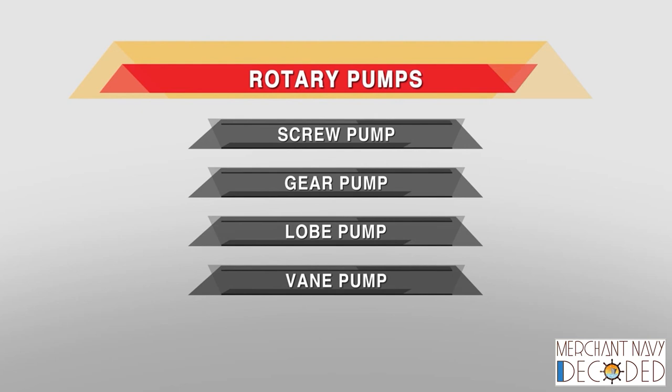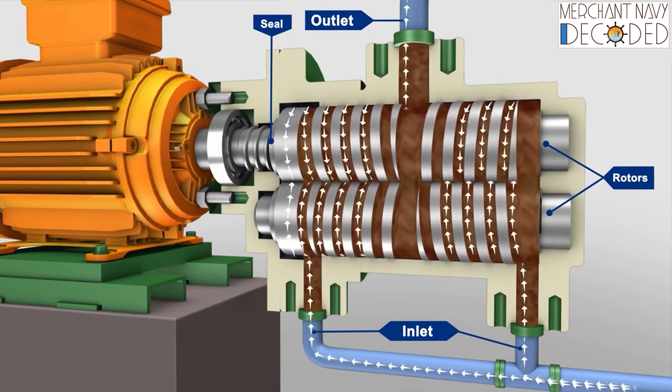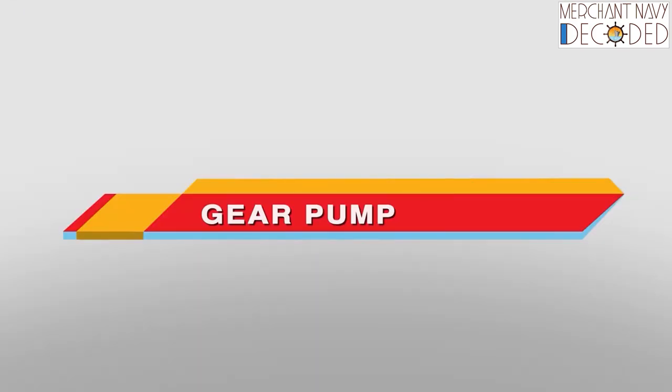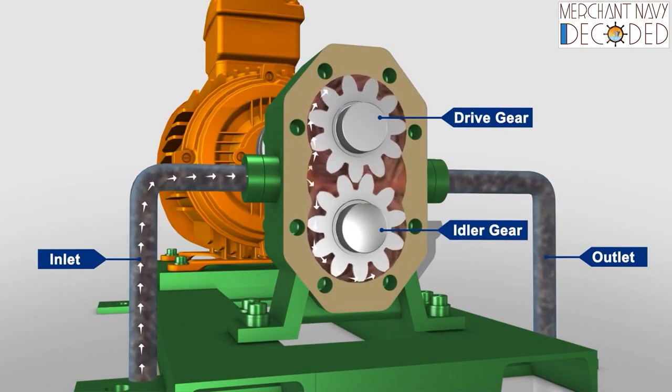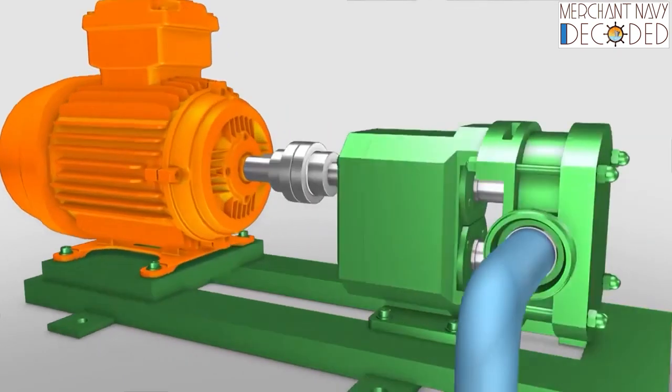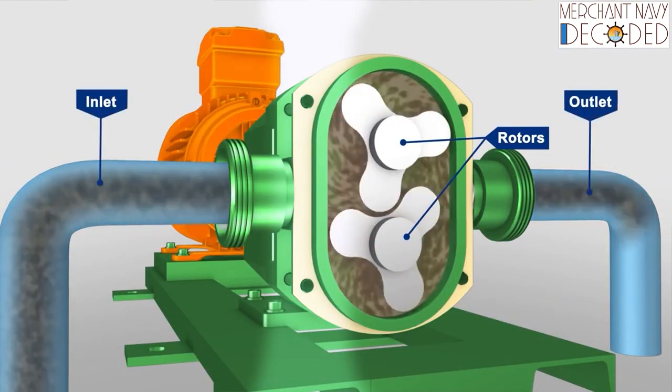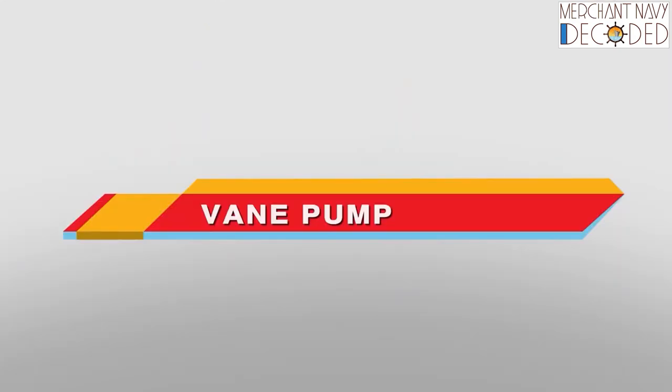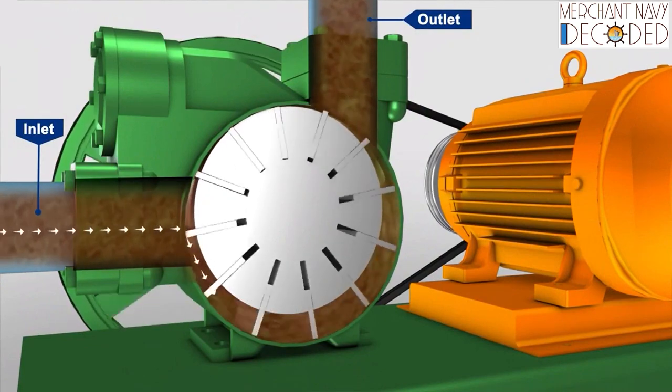Lobe pump is generally used on incinerator, and vane pump is used for vacuum pumps which are fitted on emergency fire pumps. Now let's have a look at a screw pump. This is a twin screw pump. This is a gear pump with a driver and driven gear. This is a lobe pump, quite similar to gear pump. This is a vane pump. The vanes are generally made up of mica.